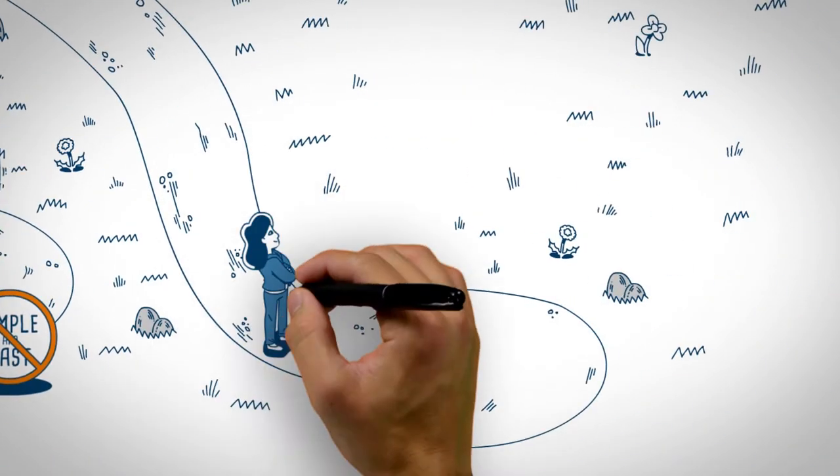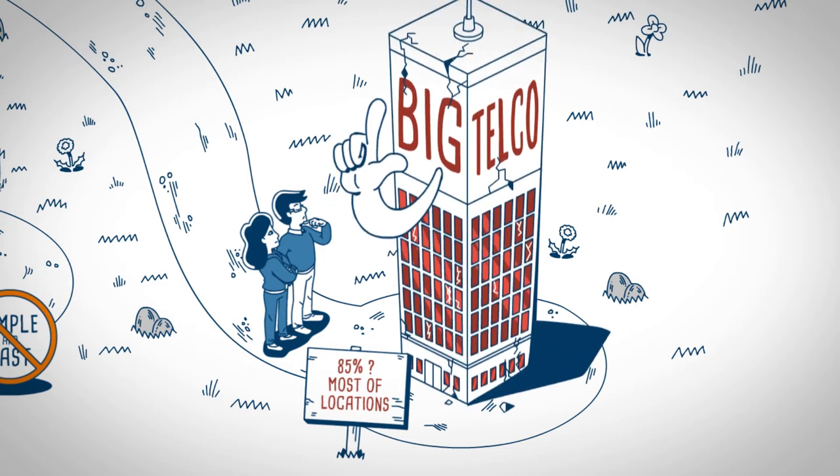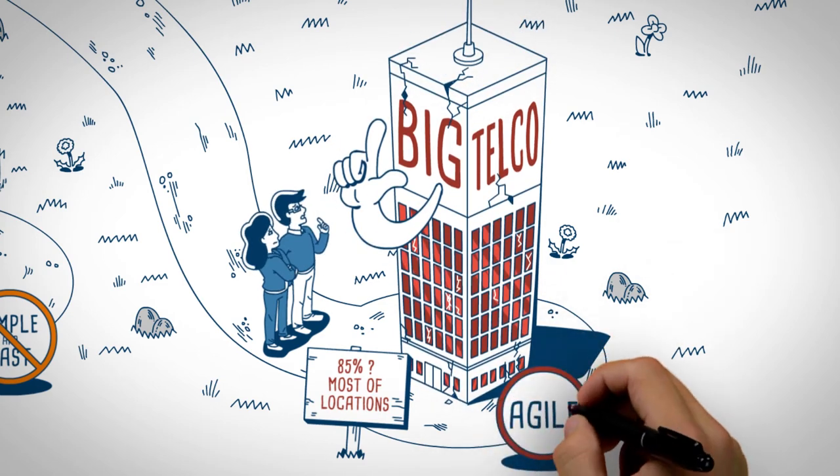Second there's Big Telco. They might tell you they cover most of your locations but they want to keep you on their own network or you're out of their comfort zone. Big Telco isn't known for being agile.